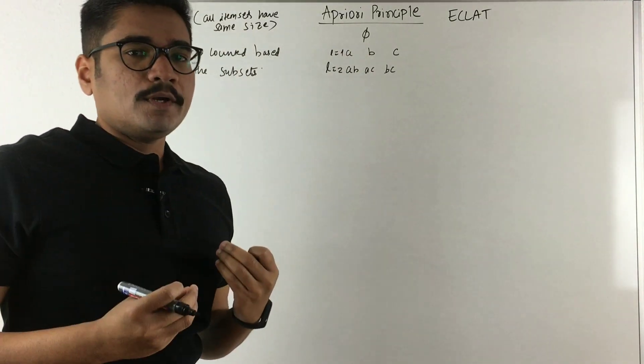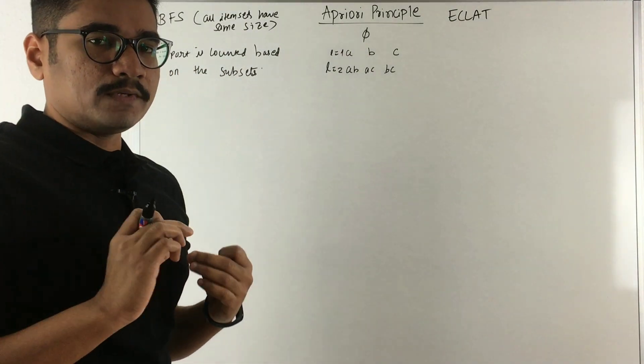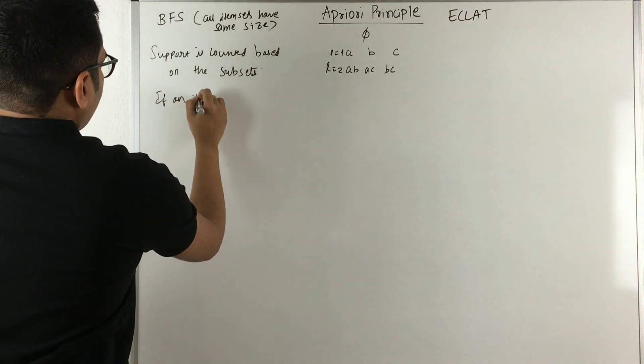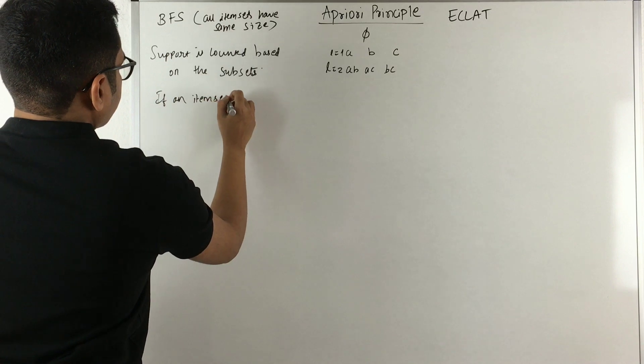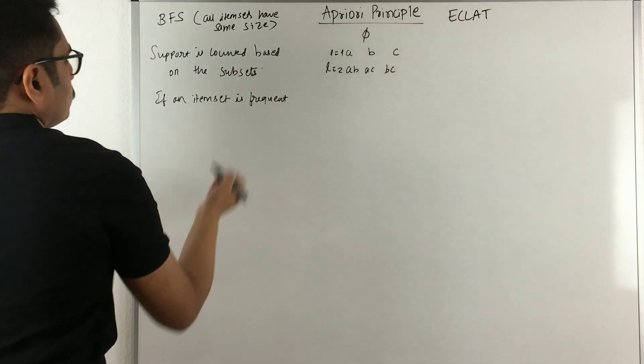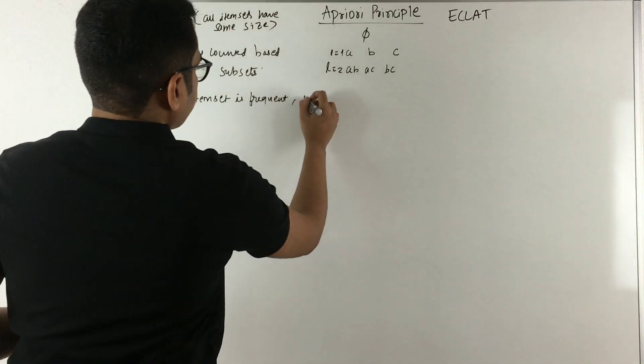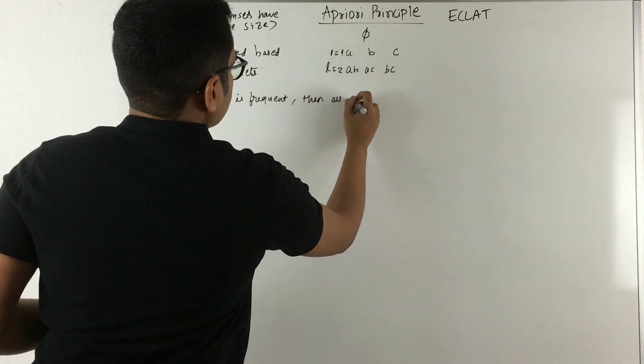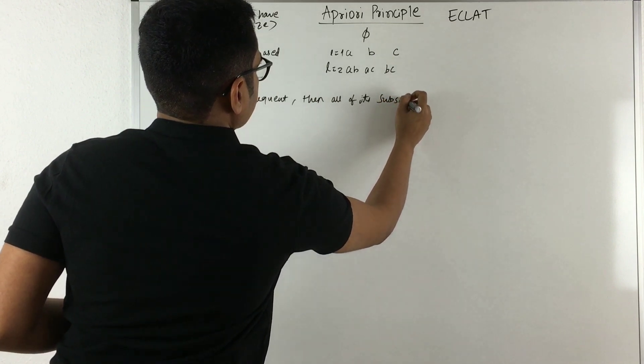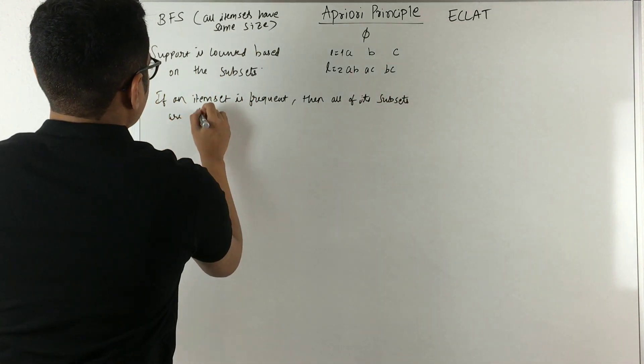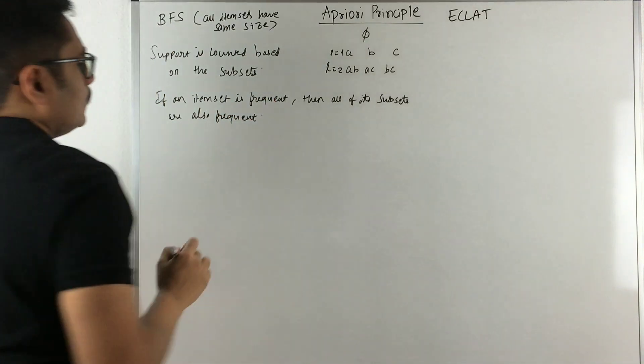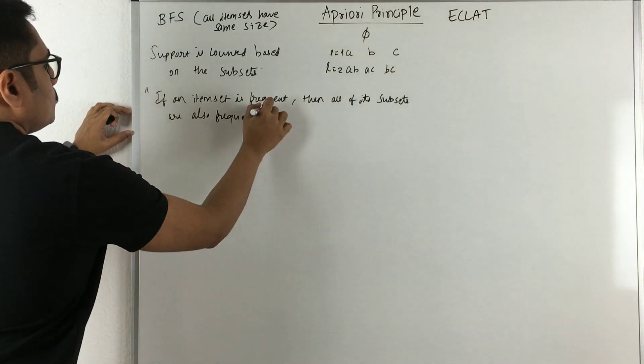The A Priori Principle basically has one tagline: if an item set is frequent, then all of its subsets are also frequent. This is what the A Priori Principle is.